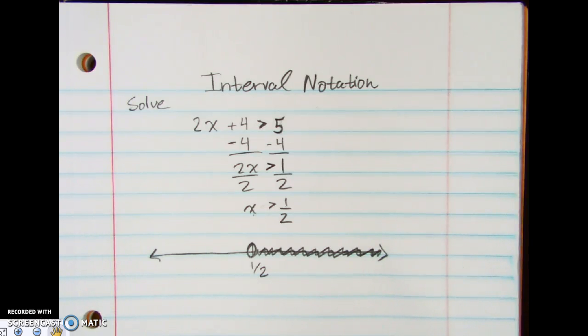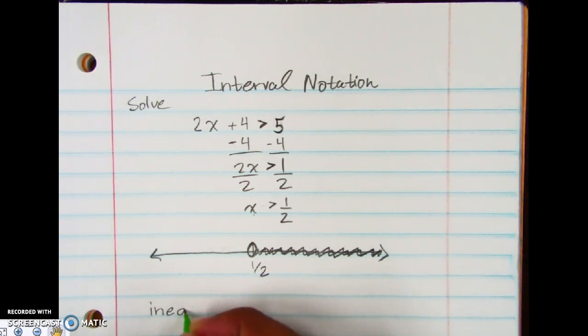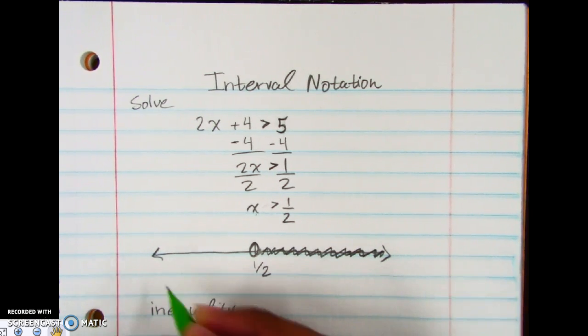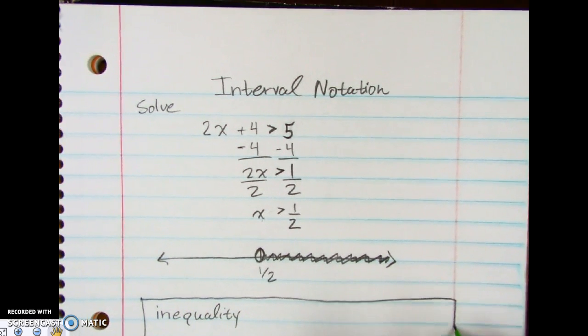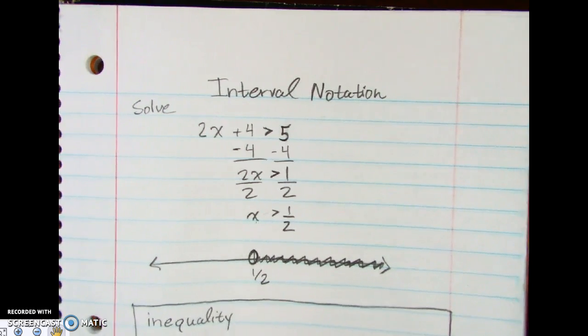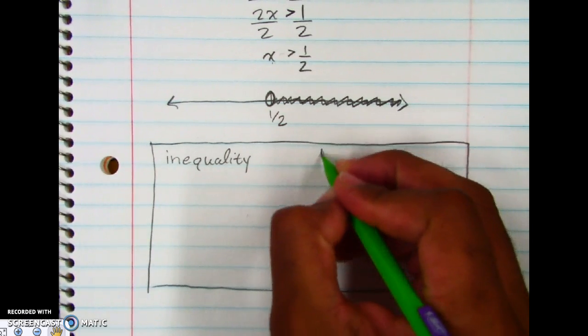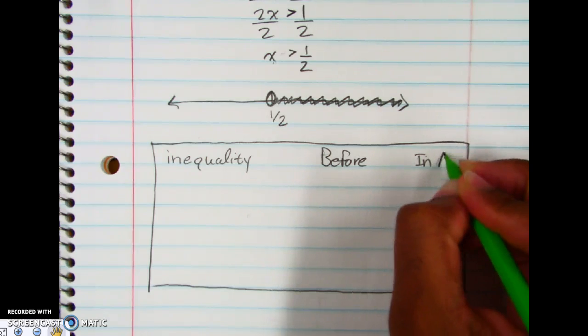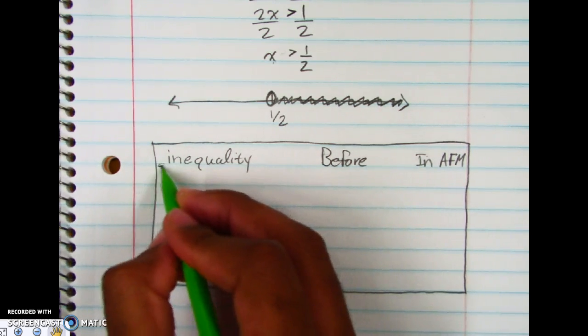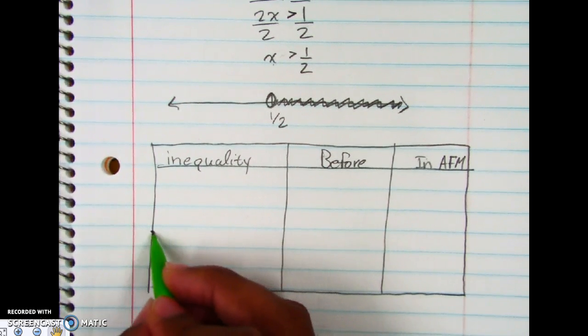Now in advanced functions, we do something a little different. Everything else here is the same except for like one piece. And so here, with our inequalities, I want you to go ahead and draw a box around this part here. Because we're going to have this box. So we're going to draw a box here. We're going to do inequality. We're going to use the word before. And we're going to use NAFM, advanced functions and modeling. And we're going to put like a line in the middle here.